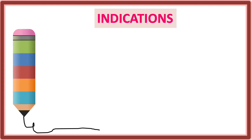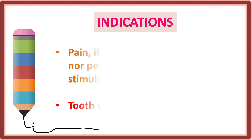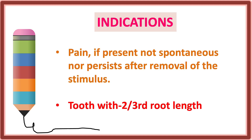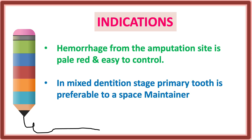The indications of pulpotomy: first, carious or mechanical exposure of vital primary teeth and young permanent teeth where inflammation is restricted to the coronal pulp only — this is a very important point. When the tooth is restorable, pain if present is not spontaneous and ceases after removal of stimulus, and the tooth has at least two-thirds of root length remaining.